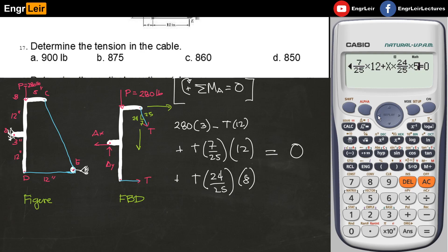Solving for T, we use our calculator and solve for X using the solve function, and I will get X equals 875. So T is 875 pounds. This is the answer for the first problem, number 17, letter B.